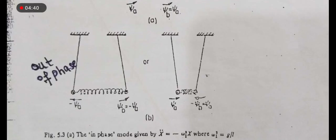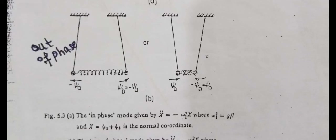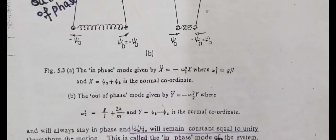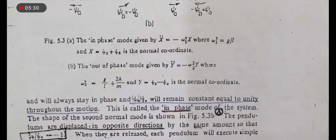دوسری mode out-of-phase ہوگی — ایک figure میں spring extend ہو رہا ہوگا اور ایک میں spring compressed ہو رہا ہوگا۔ پہلی figure میں psi_b is equal to minus psi_a ہے، یہ out-of-phase ہیں، اور spring extend ہو رہا ہے۔ دوسری figure میں دونوں inward ہو رہے ہیں اور spring compressed ہو رہی ہے۔ x double dot is equal to minus omega_1 square x, where omega_1 square is equal to g over l۔ Normal coordinate x is equal to psi_a plus psi_b۔ نیچے والی دونوں figures out-of-phase mode کی ہیں۔